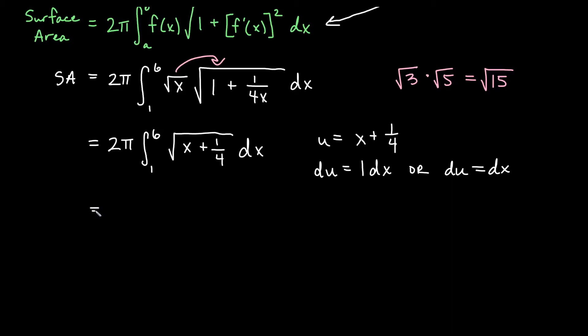That makes an easy substitution for us. If I leave my bounds in terms of x, that's a little bit less work to do. So from x equals 1 to x equals 6, the x plus one fourth under the root just becomes root u and dx becomes exactly du.